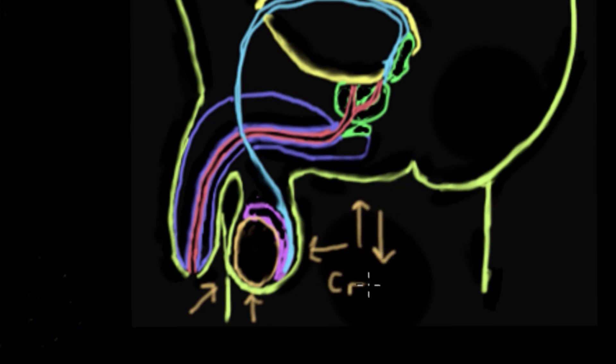It does that, the retracting upward and the descending via two muscles. The first one is called the cremaster muscle, and the second one is called the dartos muscle, kind of a cool name.